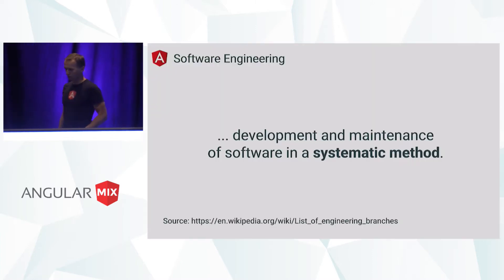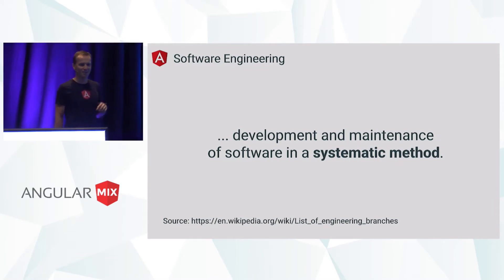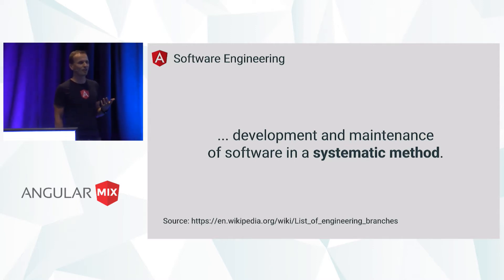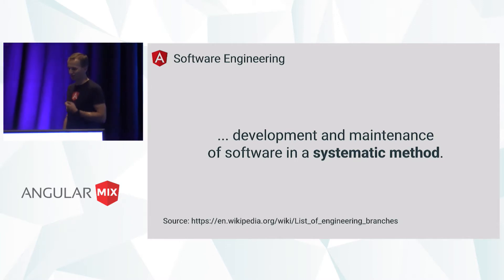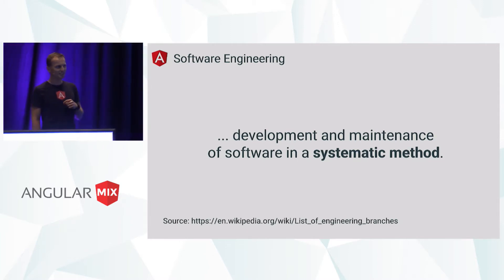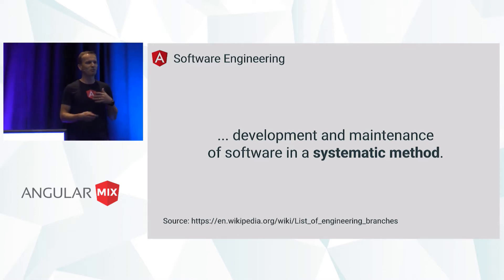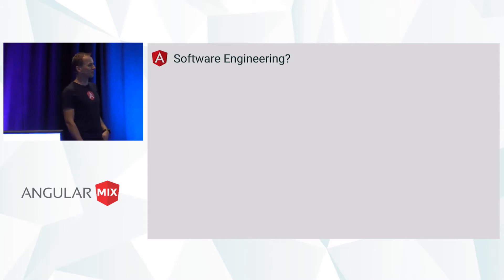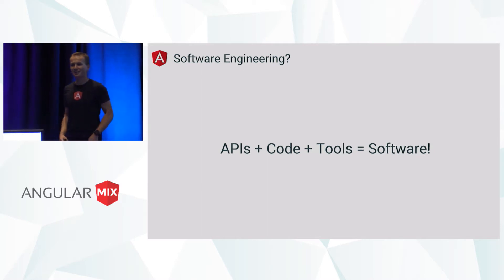When I started preparing for the presentation, I looked up the formal definition of what software engineering is, and this is what I found on Wikipedia, where software engineering is defined as development and maintenance of software in a systemic method. This is not quite how I would describe software engineering. When we talk about software engineering, we would often talk about: we take some APIs, we write some code, use a bunch of tools, put everything together, and we have software. Ta-da!